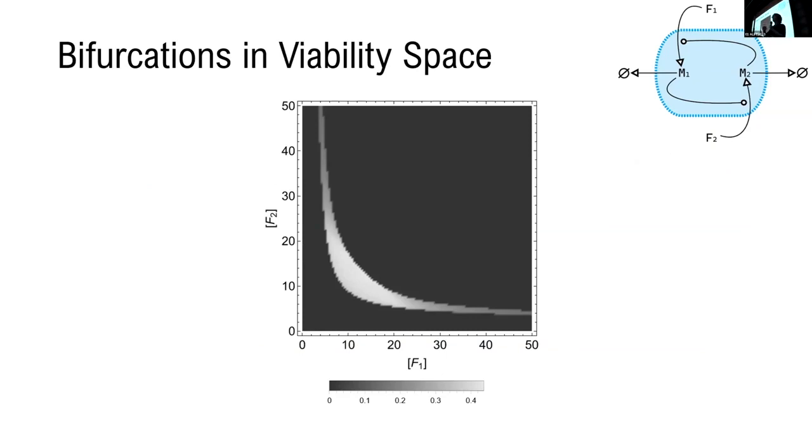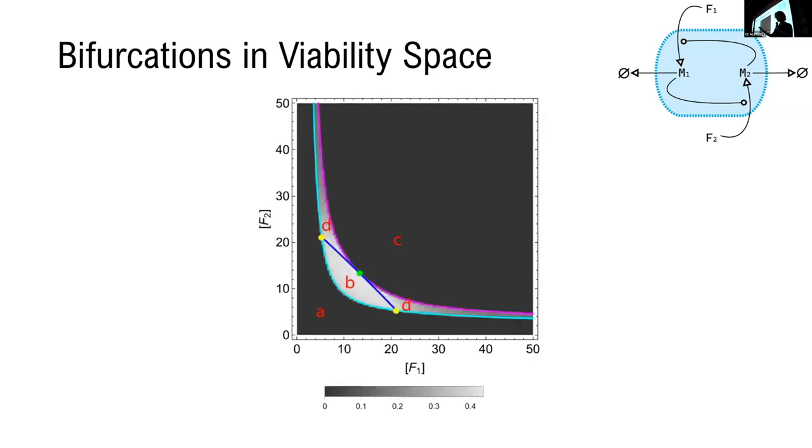Looking at 200 initial conditions for that protocell, numerically integrating for 800 arbitrary time units, and then looking to see what percentage has survived for that amount. And what I want to get across is that if we think of the appearance and disappearance of asymptotically viable and transiently viable regions as types of bifurcations, and we list the conditions under which those happen, we can get the following curves which separate the parameter space into five regions.